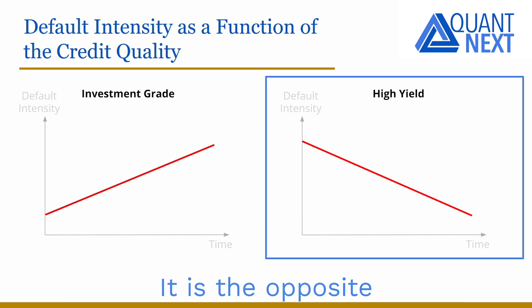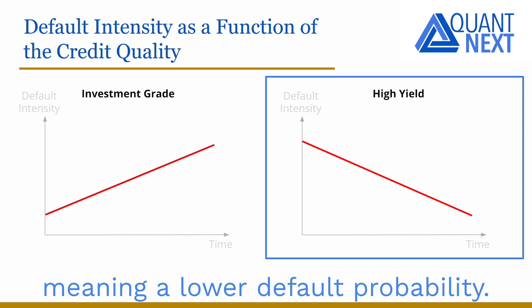It is the opposite for high yield names, with a low credit quality. If the company doesn't default in the short term, there are chances that its credit quality will improve in the future, meaning a lower default probability.